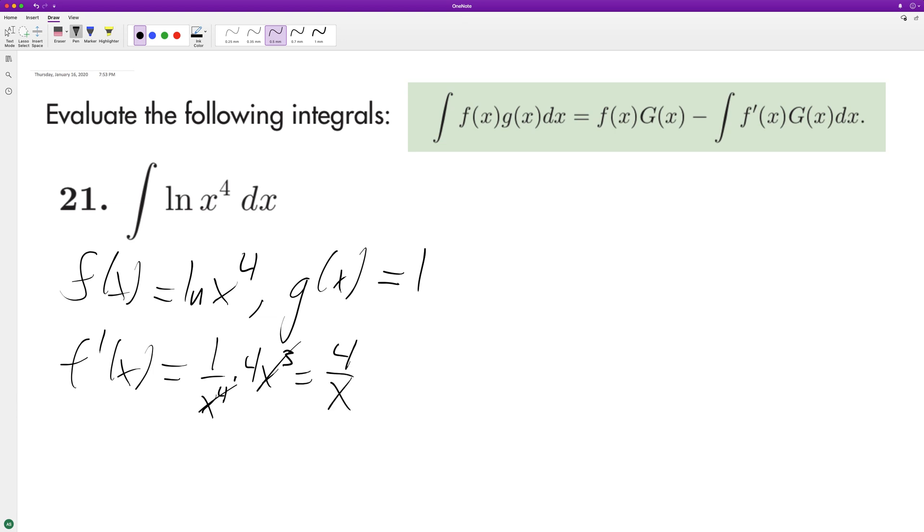So plug and play: ln(x^4) times G(x), which is x, minus f' times G, so 4/x times x, and that ends up just being equal to 4.